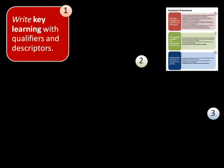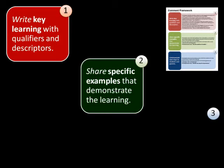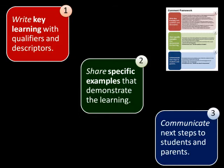First, write key learning with qualifiers and descriptors, developed from a cluster of expectations, which focuses on what students have learned. Second, share specific examples that demonstrate learning by describing significant strengths of the student's work. Third, communicate next steps to students and parents that will identify strategies for improvement.